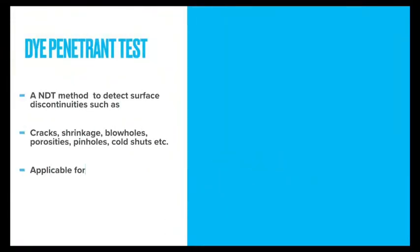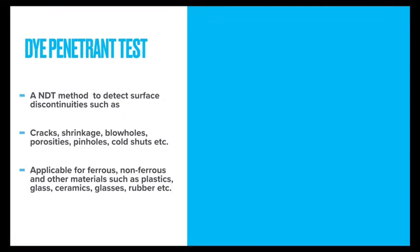Now let's dive into the dye penetrant test process itself. It is an NDT method used only to detect surface discontinuities such as cracks, shrinkage, blowholes, porosities, pinholes, cold shuts, etc. It is applicable for ferrous, non-ferrous, and other materials such as plastics, glass, ceramics, rubber, etc.